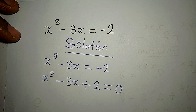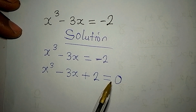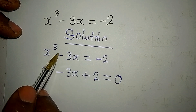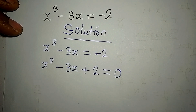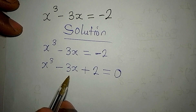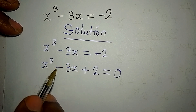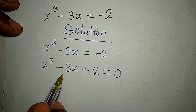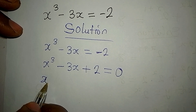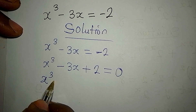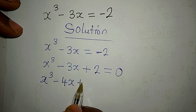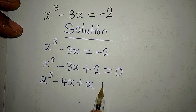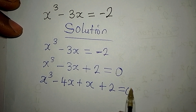This is now equal to zero because 2 has moved to the left and there's nothing on the right. Now, we look for two numbers that will represent what we have here without affecting the equation. So we're going to have x to the power of 3 minus 4x plus 1x plus 2 equals zero.